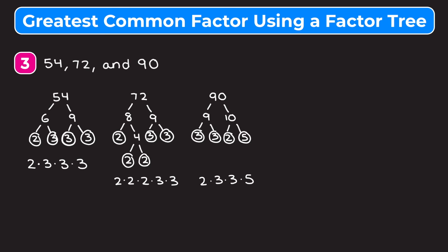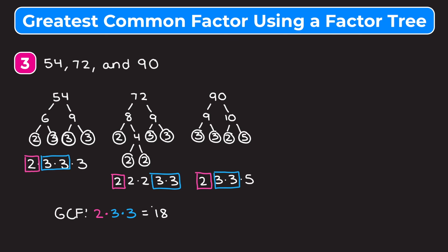Now we just have to see which prime factors show up in all three prime factorizations. There is one two that shows up in all three. We also circle two threes, since each factorization contains at least two threes. Nothing else shows up in all three. Our GCF is all those circled numbers multiplied together: two times three times three. Two times three is six, times three is 18. So the greatest common factor between 54, 72, and 90 is 18.